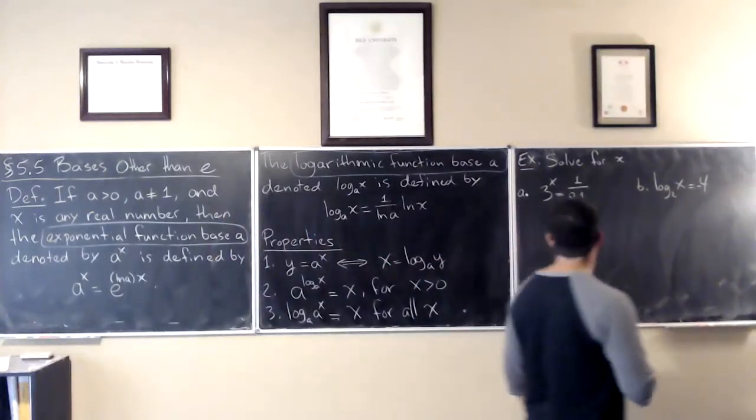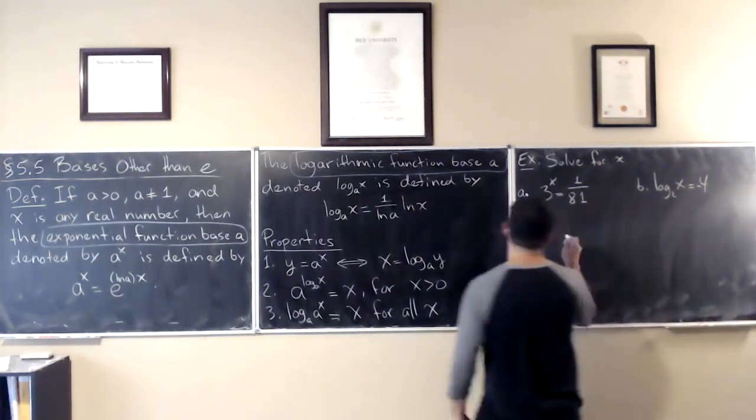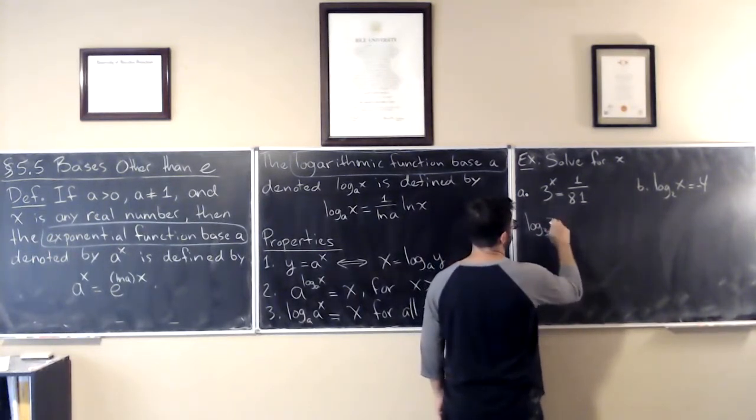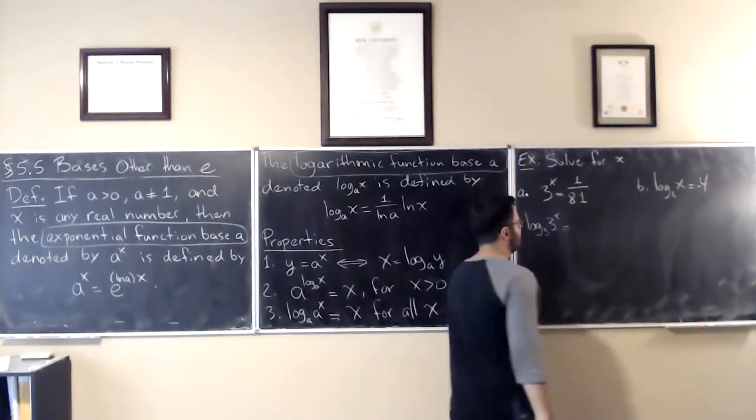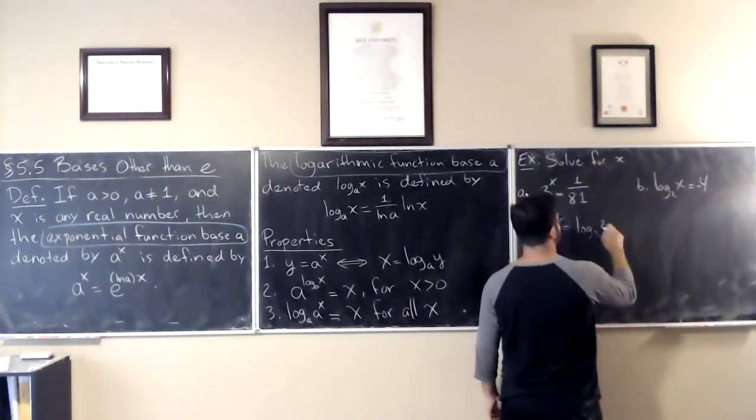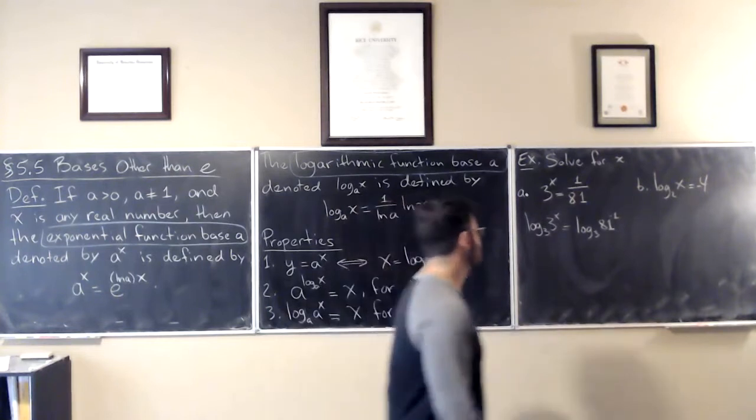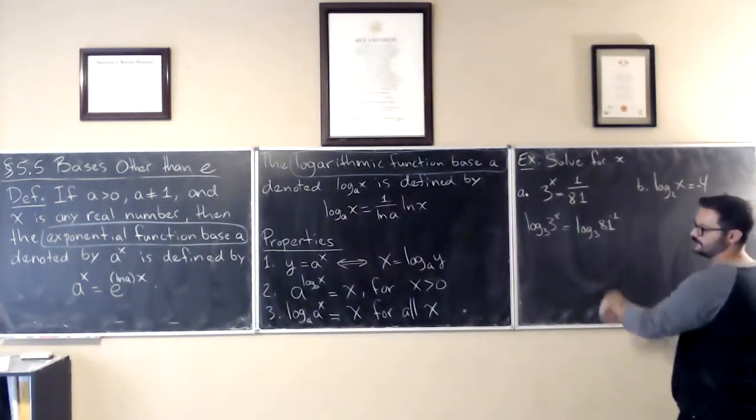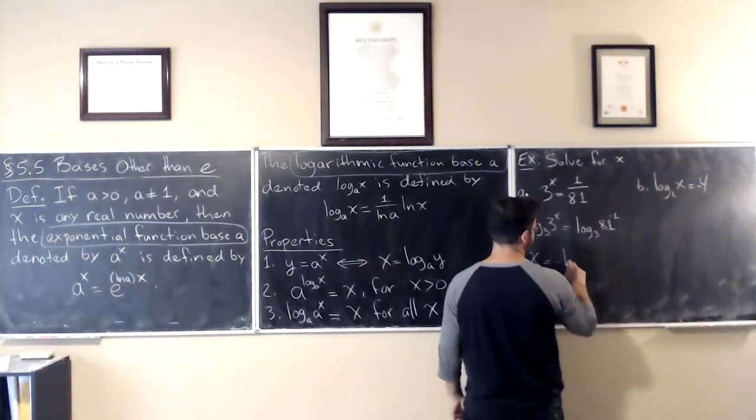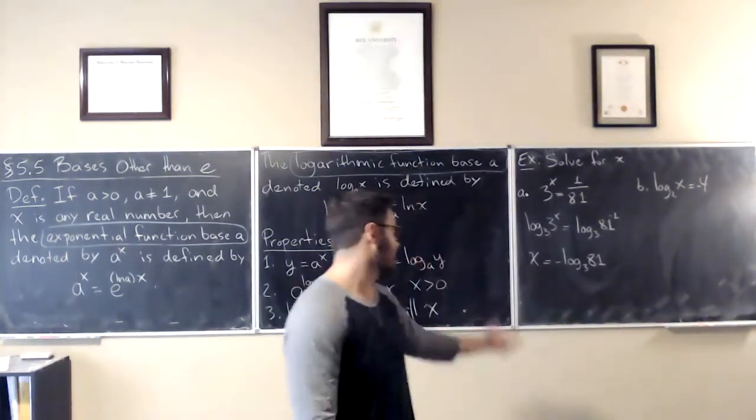But suppose you didn't know that. You could do log base 3 of 3 to the power of x is equal to, I'm going to move that up and say this is log base 3 of 81 to the power of minus 1. Log base 3 of that is just x, right? So this would be x is equal to, I'm going to move the negative in front, negative log base 3 of 81, and then whatever that number was, that would be your solution.